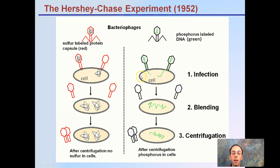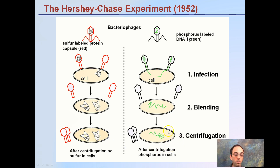Scientists originally thought there was no way DNA could be the genetic material. But in fact, DNA was the genetic information. By labeling the DNA in the viruses and finding it inside the cells — but not the protein outer shell — they concluded that DNA was the genetic material.